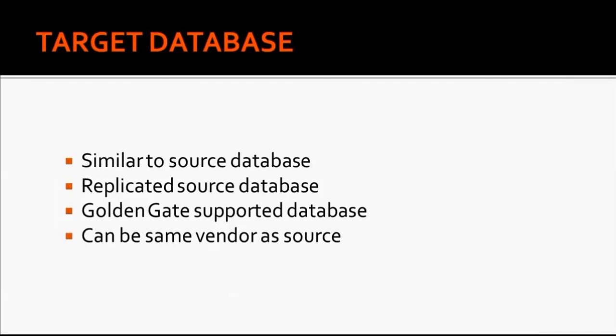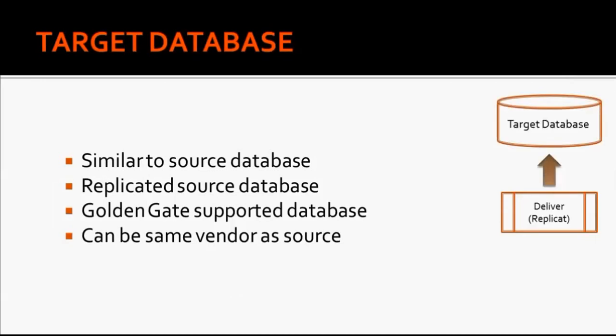The last component of the Golden Gate architecture is the target database. A target database is similar to the source database — it is where the source data is replicated, hence it can also be called a replicated database. The target database should also be a Golden Gate supported version. The target database can be of the same vendor as the source database. For example, we can configure Golden Gate with Oracle as both the source and target database.